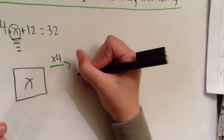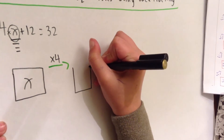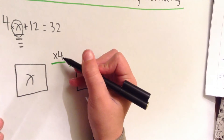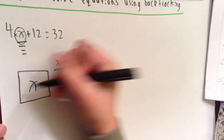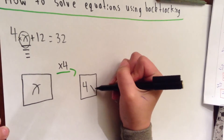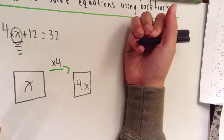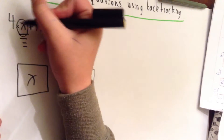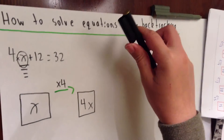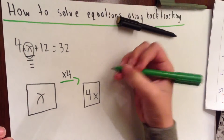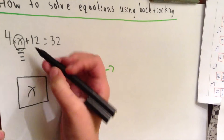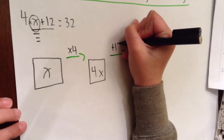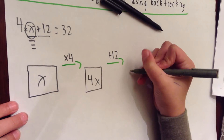Now we draw another box. Whenever we times a pronumeral by a number, the number always goes in front of the pronumeral. A pronumeral is basically a letter used instead of a number, so x is a pronumeral in this question. Now the next step is, what's next being done to the x? Next is plus 12. Now we need to write plus 12 and then we draw another box.